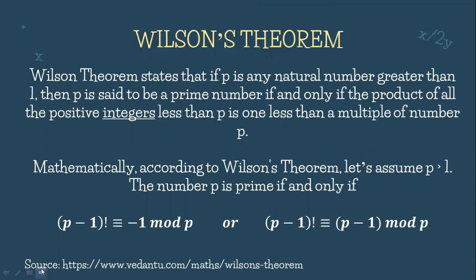Mathematically, the shortcut that Wilson's Theorem is saying is: assuming we have P greater than 1, then the number P is a prime number if and only if (P minus 1) factorial is congruent to negative 1 mod P, or equivalently (P minus 1) factorial is congruent to (P minus 1) mod P. This definition is according to vendatu.com.